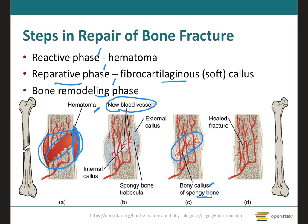The final phase is bone remodeling, where the bony callus is remodeled. Dead portions of the original bone fragments are gradually resorbed by osteoclasts, and compact bone eventually replaces the spongy bone around the periphery of the fracture. Sometimes the repair is so thorough that the fracture line is undetectable even on x-ray, though a thickened area on the bone surface remains as evidence of a healed fracture. Healing can take months because calcium and phosphorus are deposited only gradually, and bone cells grow and reproduce slowly.